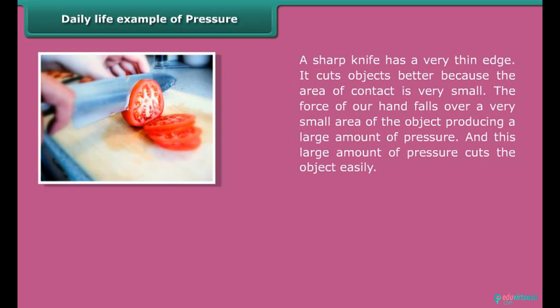A sharp knife has a very thin edge. It cuts objects better because the area of contact is very small. The force of our hand falls over a very small area of the object, producing a large amount of pressure. And this large amount of pressure cuts the object easily.